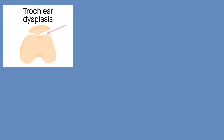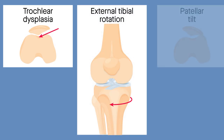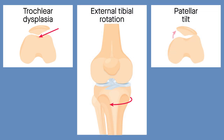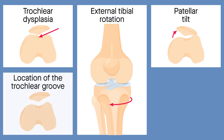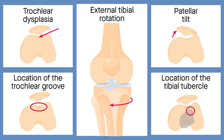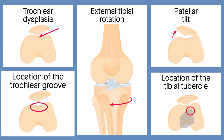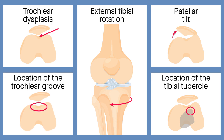The researchers looked at several variables in addition to dysplasia, including external tibial rotation, patellar tilt, and the location of the trochlear groove and tibial tubercle on the femur and tibia, respectively. These factors have recently been associated with recurring patellar instability as well, but few studies have closely examined their role in this context.